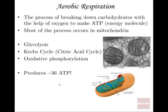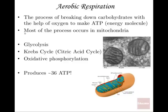Aerobic respiration is how you get energy out of the breakdown of organic molecules to keep your cells going. It's the process of breaking down carbohydrates or other organic compounds with the help of oxygen — that's what's aerobic about it — to make ATP, adenosine triphosphate. Most of the process occurs in mitochondria, which are the powerhouses of the cell where you get ATP if you're eukaryotic.